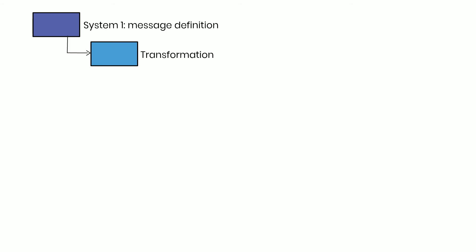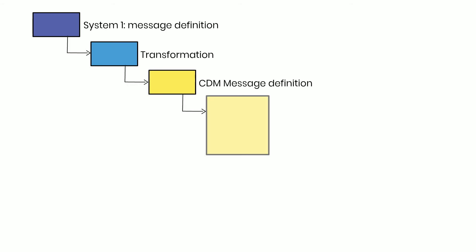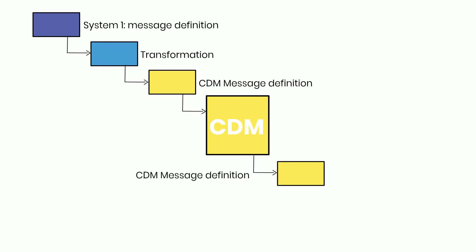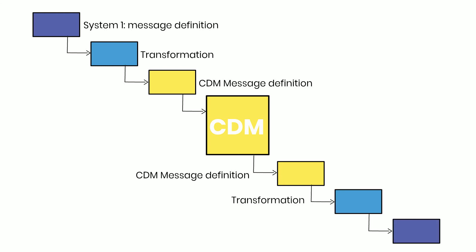The definitions that are created within Images are subsequently used by the platform as definitions that are validated inside the integration flow. In the messaging integration pattern, the source system message received is transformed to the CDM message so it can be validated properly. Once validated, the CDM message is then transformed to the target system message.